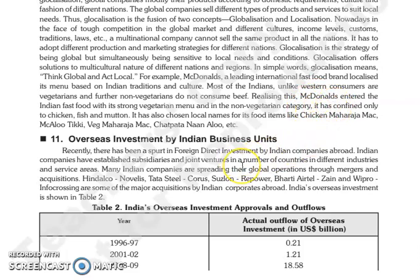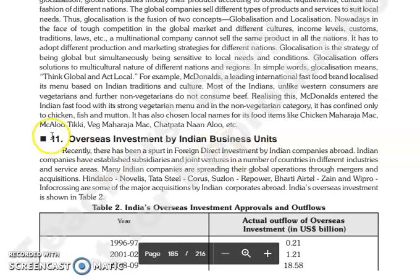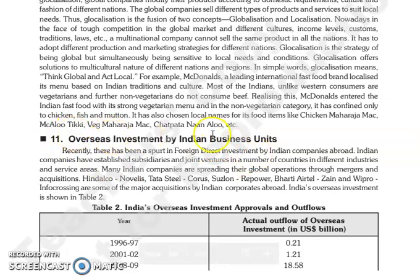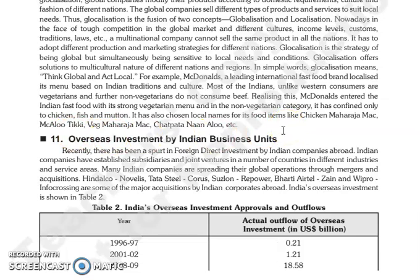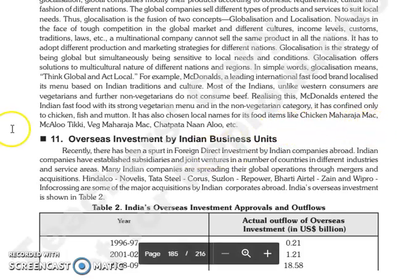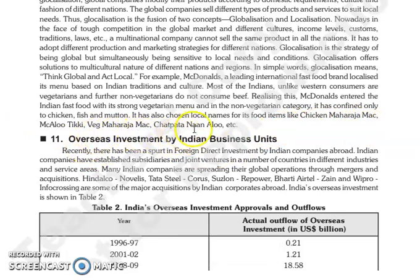McDonald's entered the Indian food industry and structured its menu into vegetarian and non-vegetarian categories. In the non-vegetarian category, it only offers chicken, fish, and mutton. Even the names of their food items have local names, such as Chicken Maharaja Mac, Mac Alu Tikki, Veg Maharaja Mac, Chhat Patta, and Naan Alu.